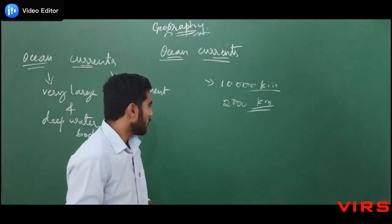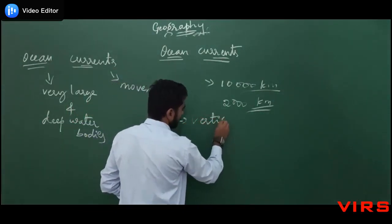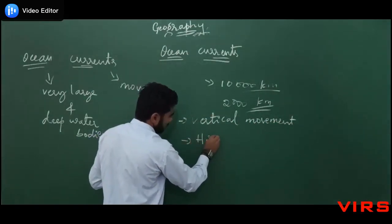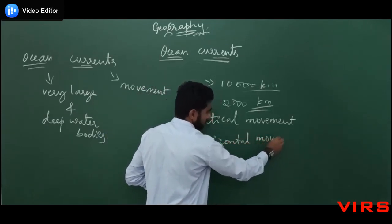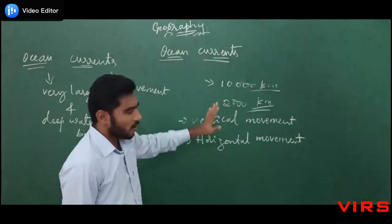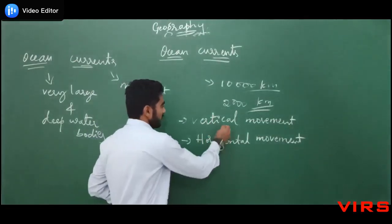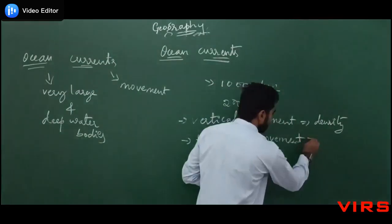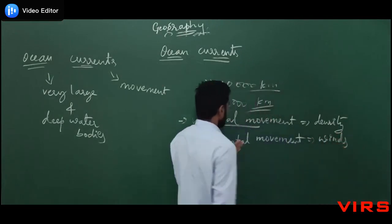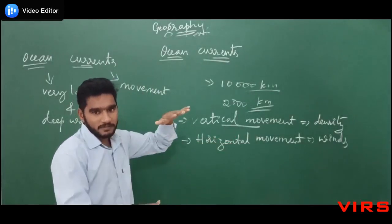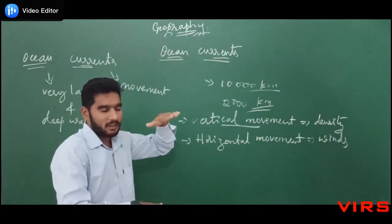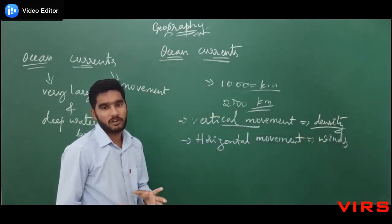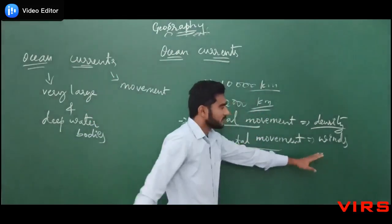The movement of ocean currents is of two types: one is vertical movement and the other is horizontal movement. Vertical movement depends on density, and horizontal movement depends on winds. Vertical movement means the rising of bottom water and sinking of surface water due to the density of sea water. The density of sea water depends on temperature and the amount of salt present.